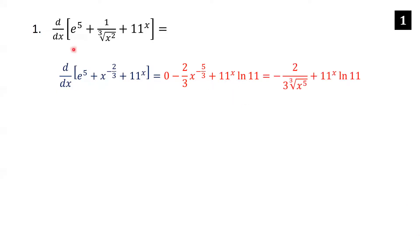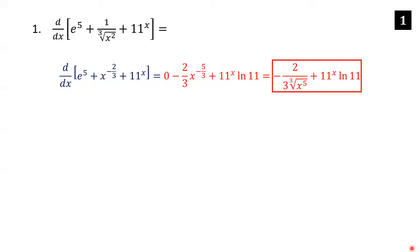Simplifying: we don't need to write the zero. For x to the negative five thirds, we write it as one over the cube root of x to the fifth, because of the negative exponent, the three as denominator giving the cube root, and five as the power. Everything else stays the same — and that's the answer.